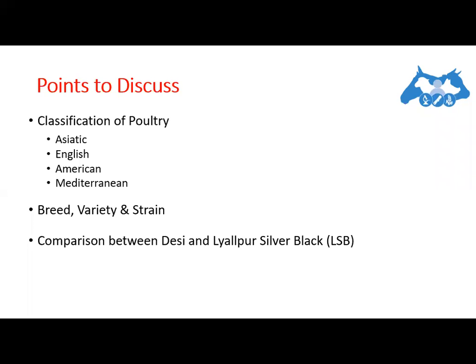Looking at the definition of variety: within a breed, a variety is a group of birds which have been divided either by plumage color, shape of their comb, or feather pattern. For example, Single Comb White Leghorn is different from Rose Comb Leghorn — these are two different varieties within the White Leghorn breed.